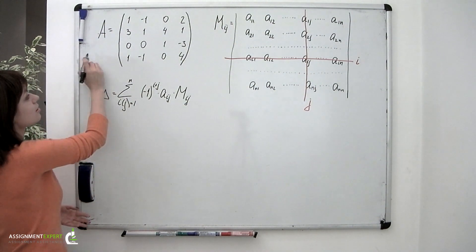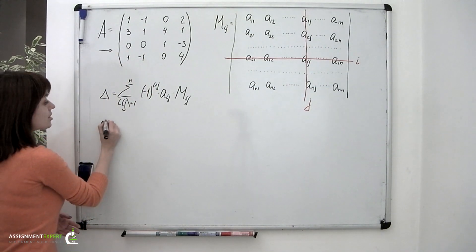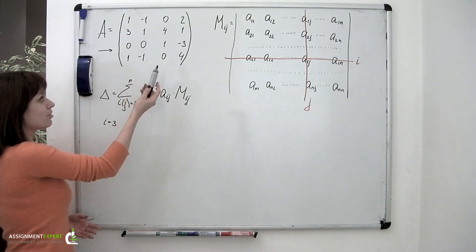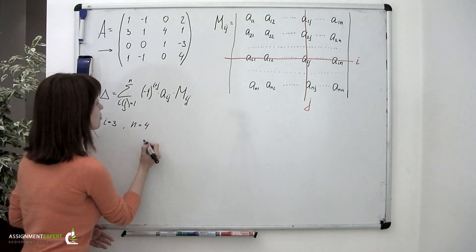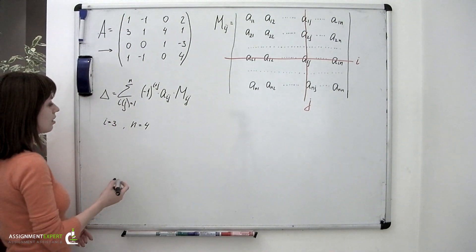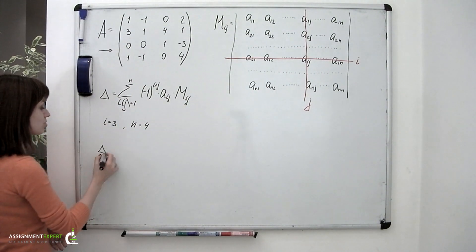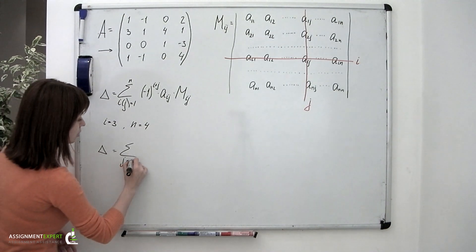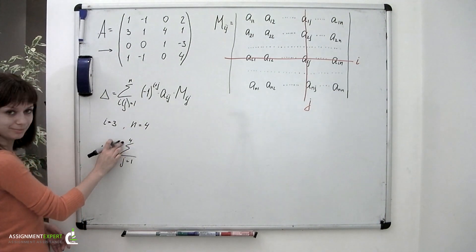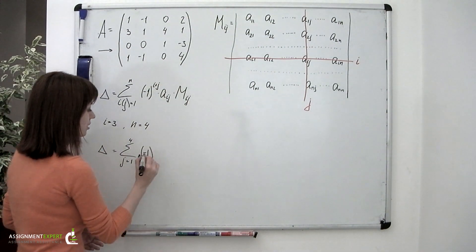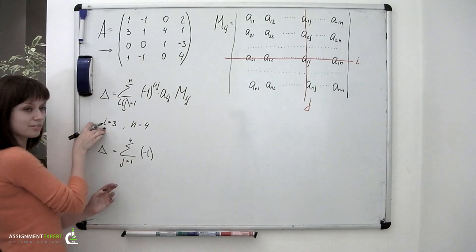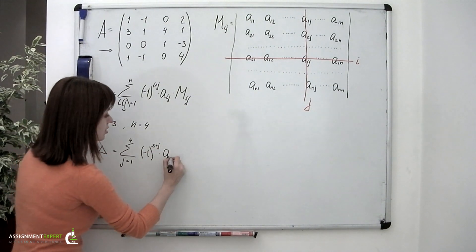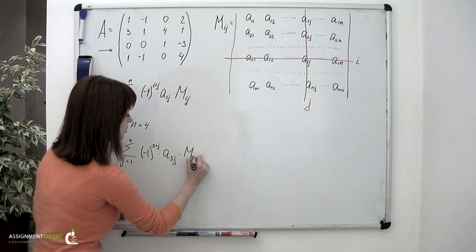It's best to choose the row or column containing zeros or the fewest nonzero elements. I suggest we pick the third row, setting i to a value of 3. Our matrix is of size 4 by 4, so n equals 4. Our formula transforms to: delta equals the sum for j from 1 to 4 of negative 1 raised to the power of 3 plus j, times a sub 3j, times m sub 3j.